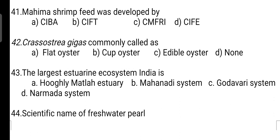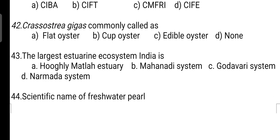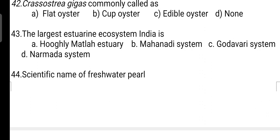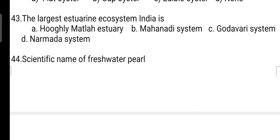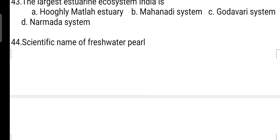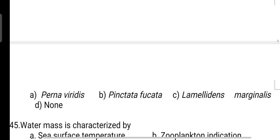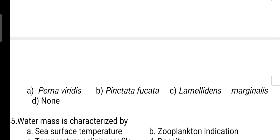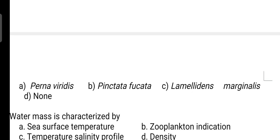Crassostrea gigas is commonly known as cup oyster. Next, the largest estuarine ecosystem in India: correct answer is Option A — it is the Hooghly-Matla estuarine system. Next, scientific name of freshwater pearl mussel: correct answer is Option C — it is Lamellidens marginalis.